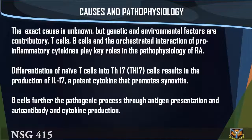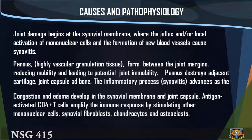T cells, B cells, and the orchestrated interaction of pro-inflammatory cytokines play key roles in the pathophysiology of RA. Differentiation of naïve T cells into TH17 cells results in the production of IL-17, a potent cytokine that promotes synovitis. B cells further the pathogenic process through antigen presentation and autoantibody and cytokine production.